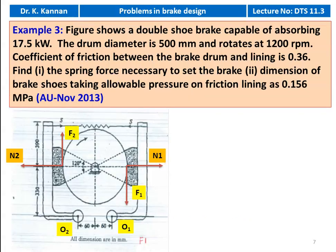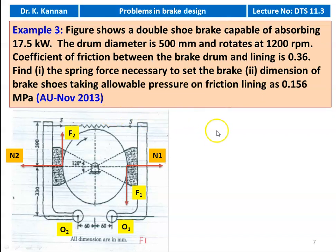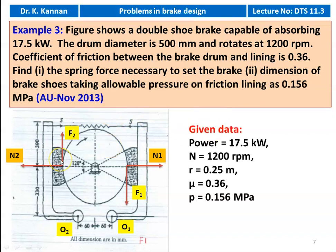Example number 3, from the November 2013 question paper. This is the double block brake. The figure shows a double shoe brake capable of absorbing 17.5 kW. The drum diameter is 500 mm and rotates at 1200 rpm. Coefficient of friction between the brake drum and the lining is 0.36. Find: (1) the spring force necessary to set the brake, and (2) the dimensions of the brake shoe taking allowable pressure of the friction lining as 0.156 megapascal.